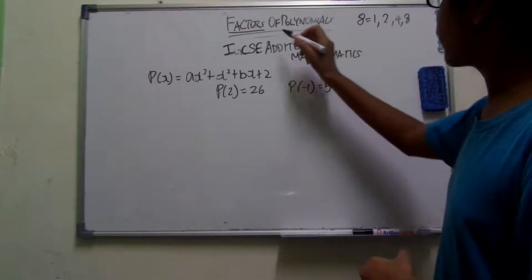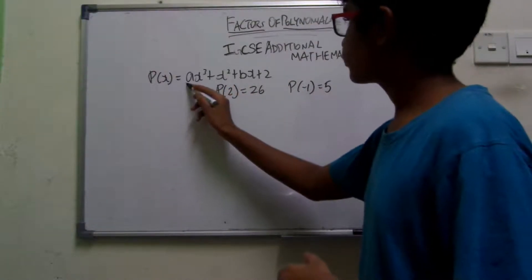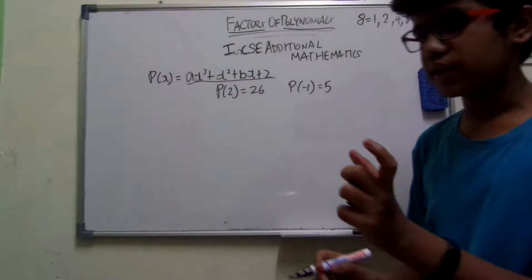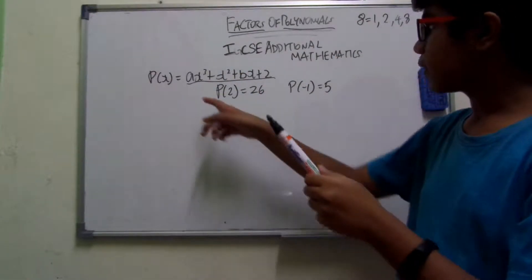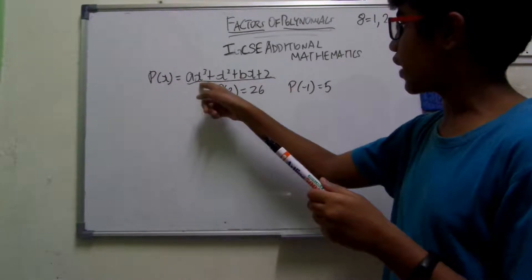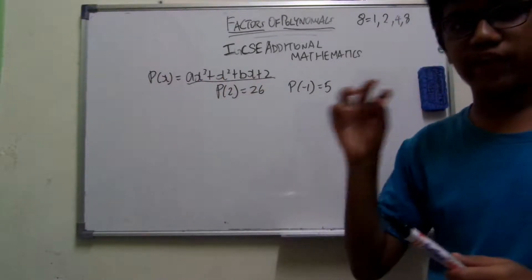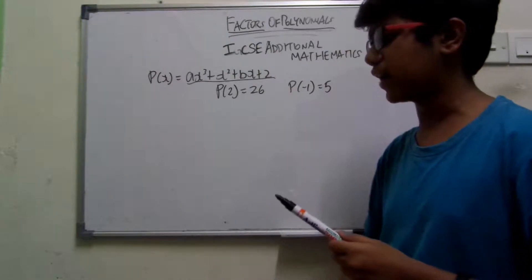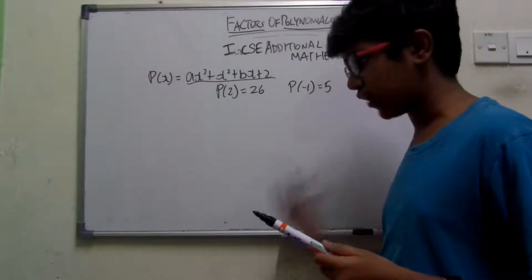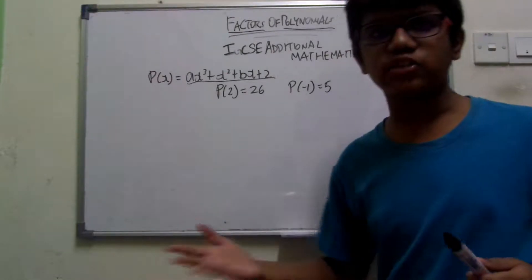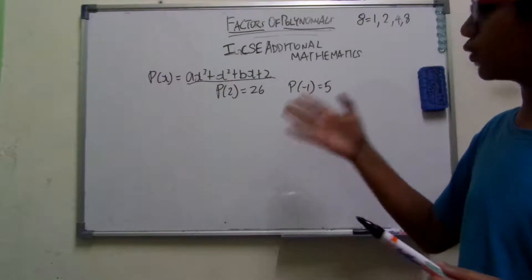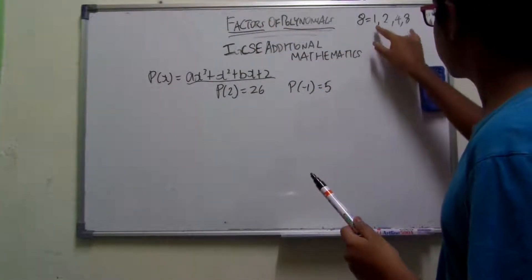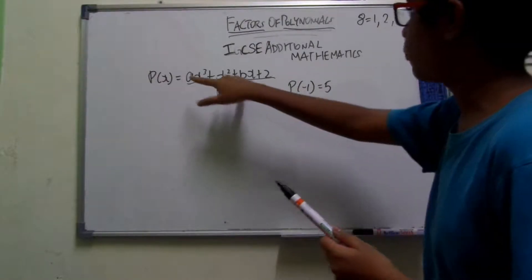A polynomial is any function, any equation which has a variety of exponents. So it has a cube, it has a square, it has a single x, and it has a value without an algebraic expression. So that's exactly what a polynomial means. So we're trying to find factors of polynomials.